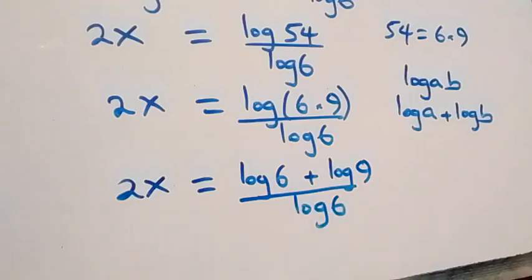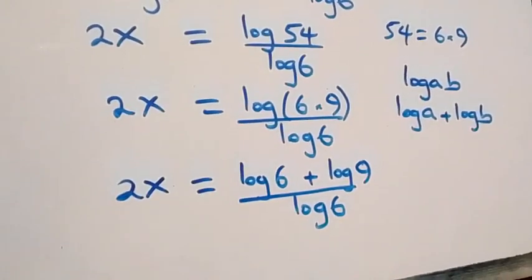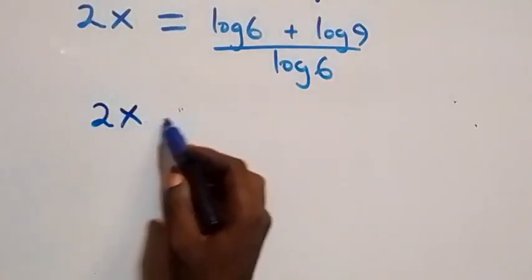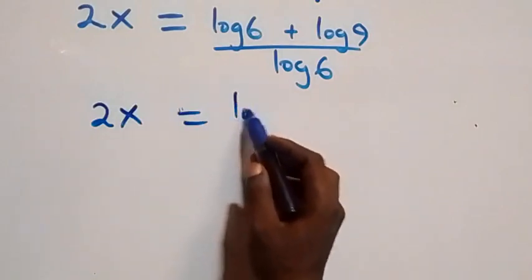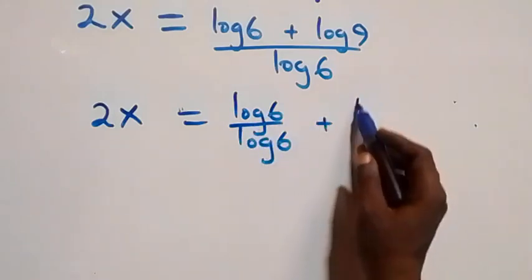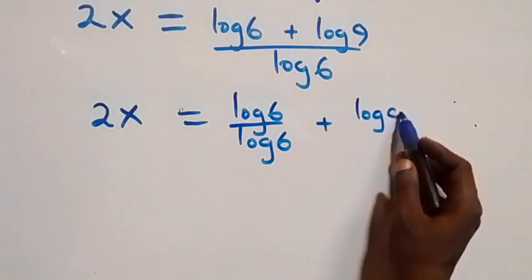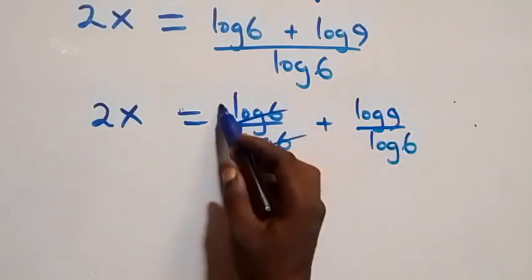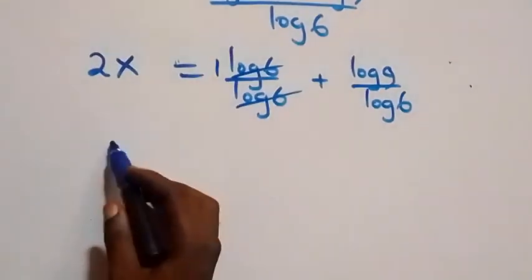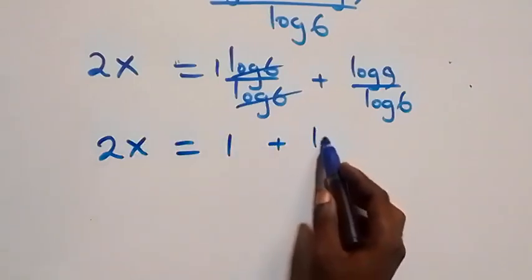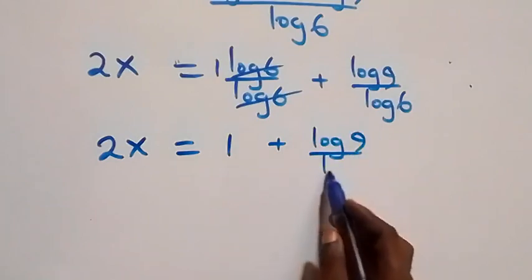We separate this into two fractions: 2x equals to log 6 over log 6 plus log 9 over log 6. Log 6 over log 6 cancels to give one, so we have 2x equals to 1 plus log 9 over log 6.